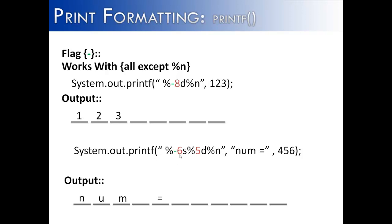We see the same thing down here. We have negative six, or hyphen six, which is going to left justify the argument num equals. And then here we do not have a negative sign, so it is going to right justify, which is its default position without using the flag, and it is going to be justified on the right here.